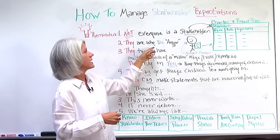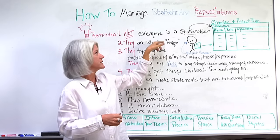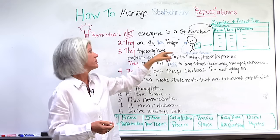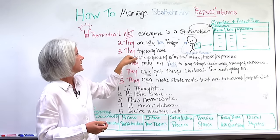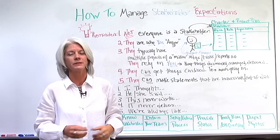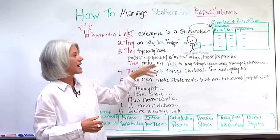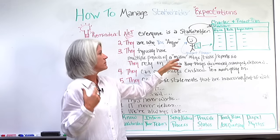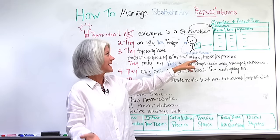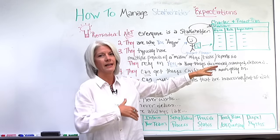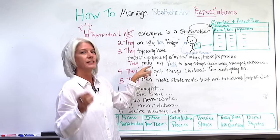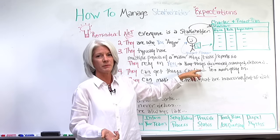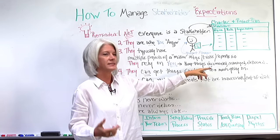Number two: the stakeholders are who the project manager answers to. They're documented, so they're the people you look to for guidance. Number three: a reminder that stakeholders typically have multiple projects going on. They're attending many meetings, responsible for many tasks, looking at lots of reports, and trying to make decisions. So they rely on you, the project manager, to keep things documented, managed, and delivered.